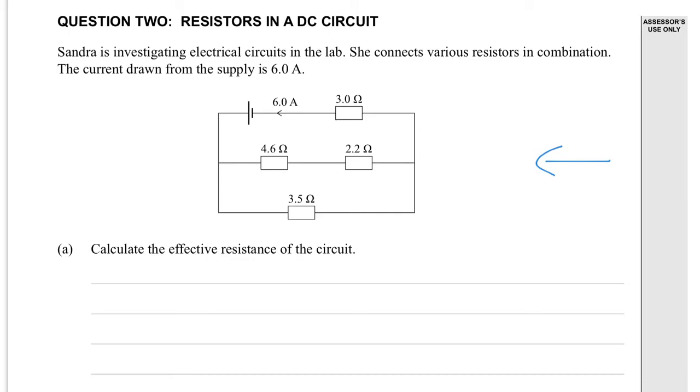You have to add the series bit here first, and then you have to - so that's going to be equal to 6.8 ohms: 2.2 plus 4.6. And then you're going to do...